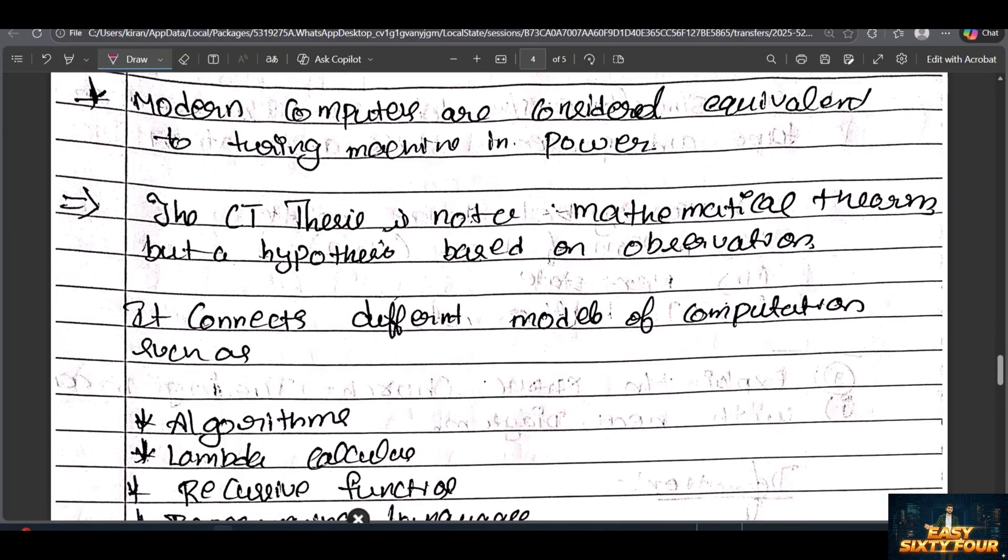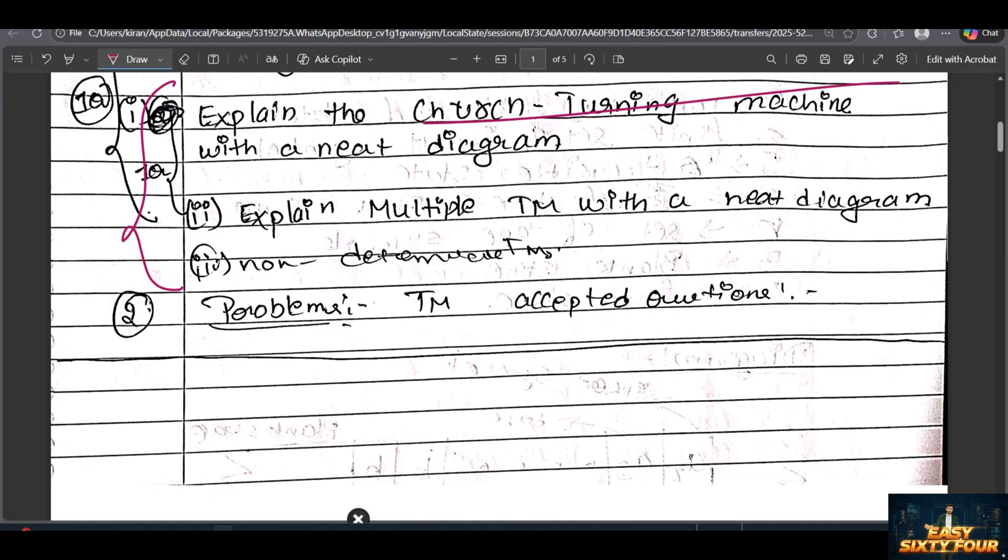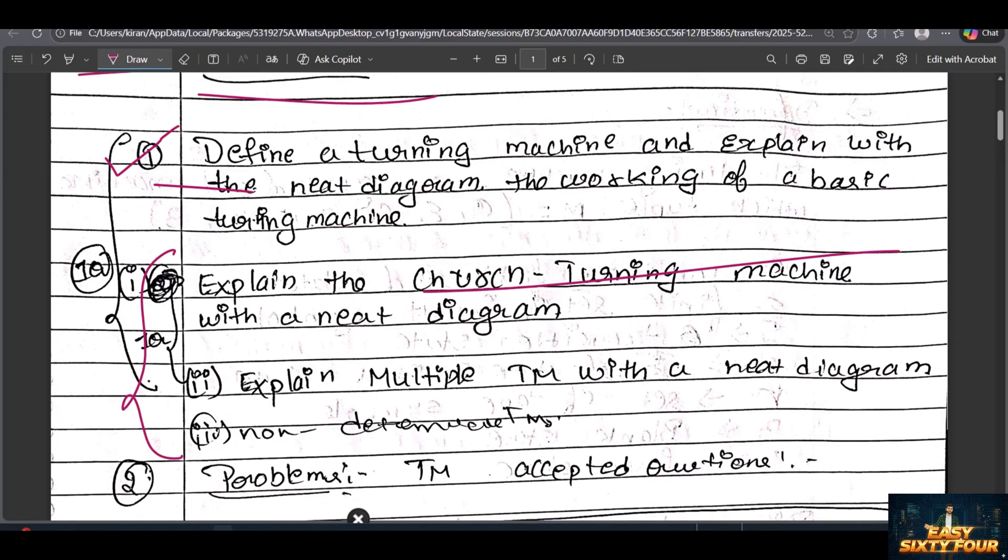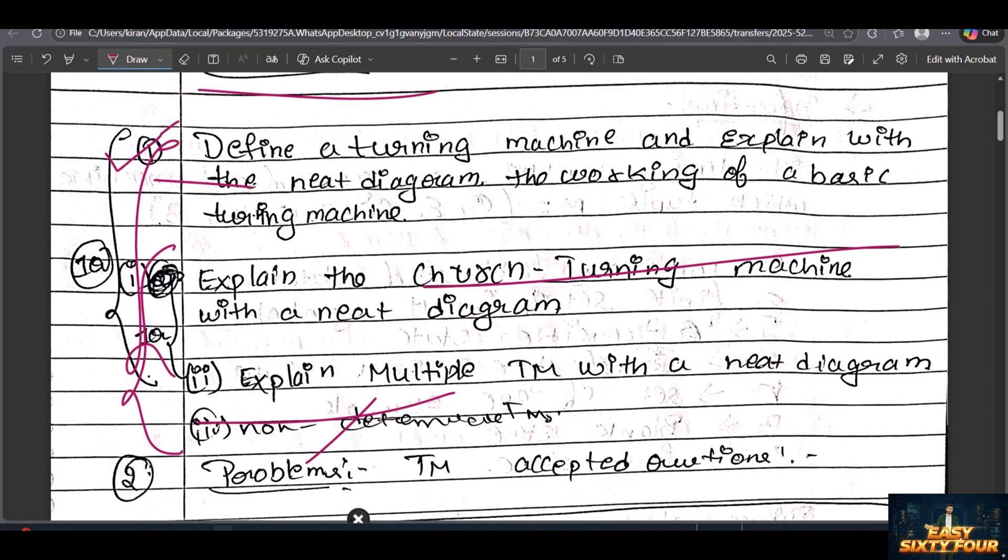After that, there's multiple Turing machines. These are important questions, but if you want to get out of syllabus, I'll tell you these three questions are enough. Or two questions, because these both will be sub-questions. Non-deterministic Turing machine - don't read these questions because this is not going to come for tomorrow's exam. I can guarantee. You read these three questions, it's enough.